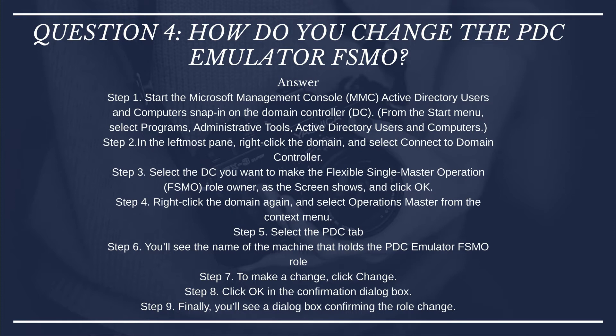Question 4: How do you change the PDC Emulator FSMO? Answer: Step 1 — Start the Microsoft Management Console Active Directory Users and Computers snap-in on the domain controller (DC). From the Start menu, select Programs, Administrative Tools, Active Directory Users and Computers. Step 2 — In the leftmost pane, right-click the domain and select Connect to Domain Controller.